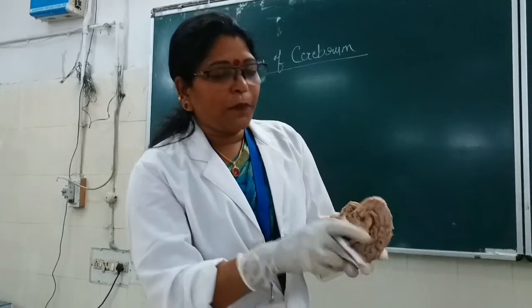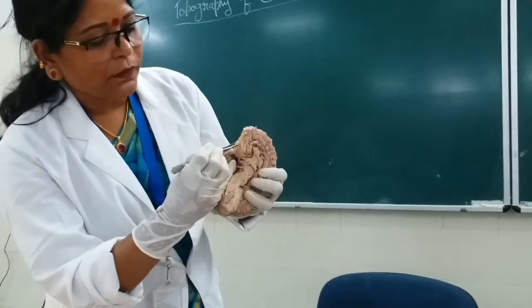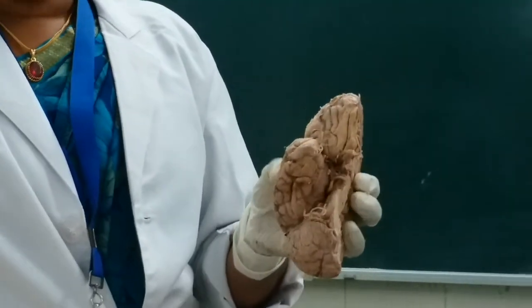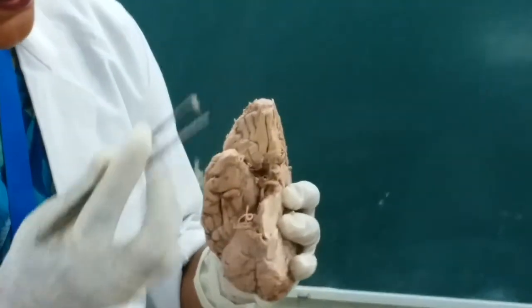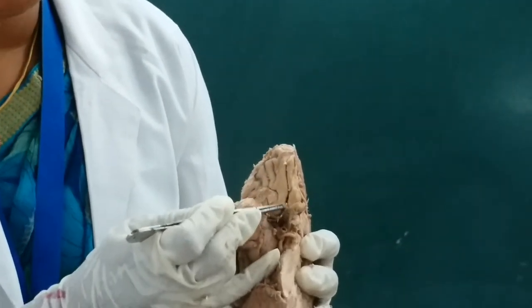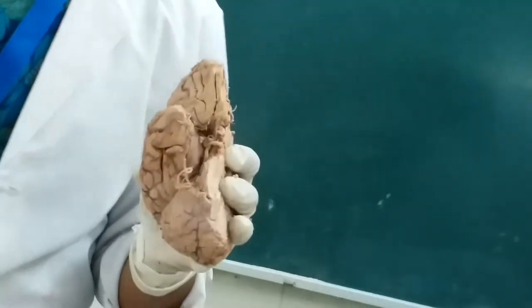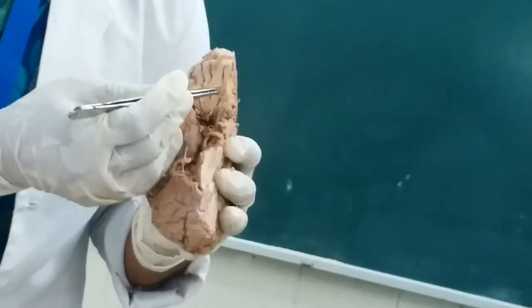Now, on the orbital surface of the frontal lobe, there is an H-shaped sulcus. You see the inferior aspect — the inferior surface on this orbital surface, the orbital part of this inferior surface, which is lying on the orbital plate. There is a sulcus here: this is the olfactory sulcus, which is running anterior-posteriorly. The important structure here is the olfactory tract — the first cranial nerve tract — which runs over the olfactory sulcus.